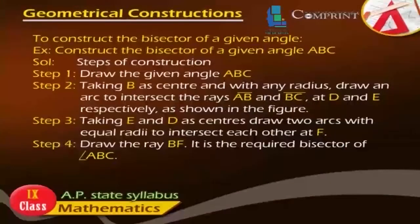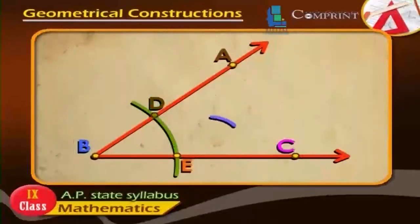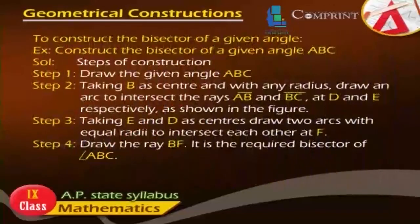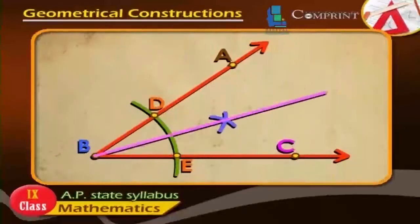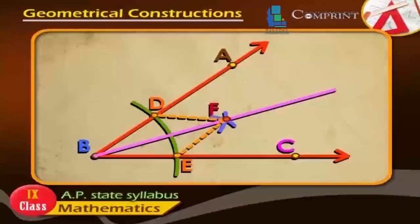Step 3: Taking E and D as centers, draw two arcs with equal radii to intersect each other at F. Step 4: Draw the ray BF. It is the required bisector of angle ABC.